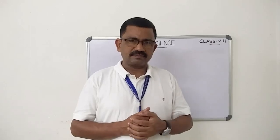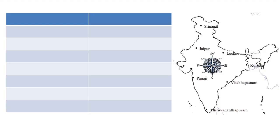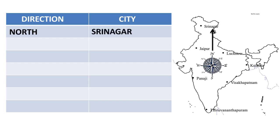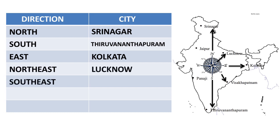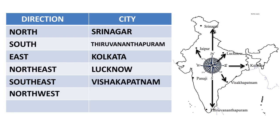Here is the answer. Direction and city: North — Srinagar. South — Thiruvananthapuram. East — Kolkata. North-East — Lucknow. South-East — Visakhapatnam. North-West — Jaipur. South-West — Panaji.